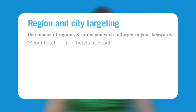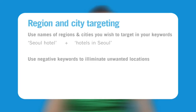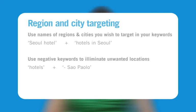Add the names of regions and cities you do not wish to target as negative keywords. For example, if your ad group contains the broad match keyword hotels, add Sao Paulo as a negative keyword with a hyphen to prevent your ad from showing for the query Sao Paulo hotels.